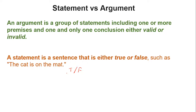An argument is a group of statements in which there are premises and one conclusion, and an argument could be either valid or invalid. This is a very important point: an argument cannot be true or false — it can only be valid or invalid. So: a statement could be either true or false, and an argument could be valid or invalid.